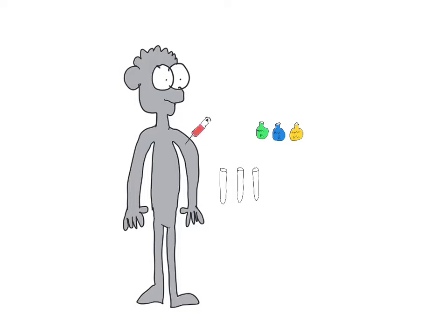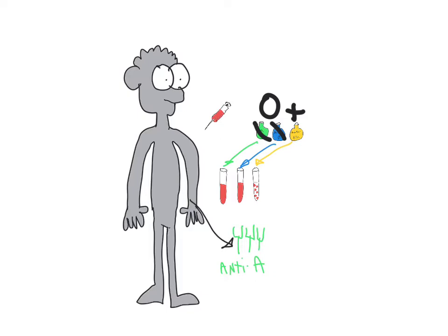Let's do one more. In this instance, only the anti-RH antibodies cause coagulation. Based off of that, what is this patient's blood type? Yes, they are O positive. Knowing that, what antibodies would they have in their bloodstream? Yes, they would have anti-A and anti-B antibodies. They would never produce anti-RH antibodies, since those would attack their own blood type. Based off of that, what type or types of blood could we give this patient in a transfusion? Yes, we could give them an exact match, O positive. But we can also give them O negative. Neither of those blood types contain either the A antigen or the B antigen.